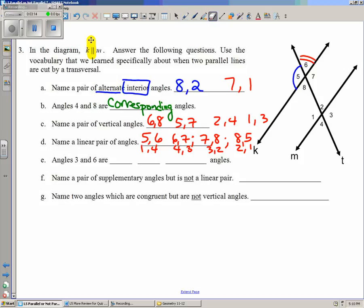Angles 3 and 6 are, if you notice, they are on the same side of the transversal and they are outside the transversal. So we call them same-side exterior angles.